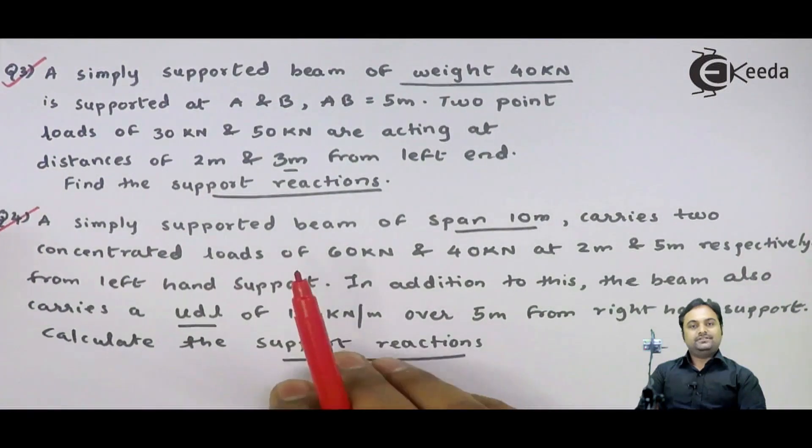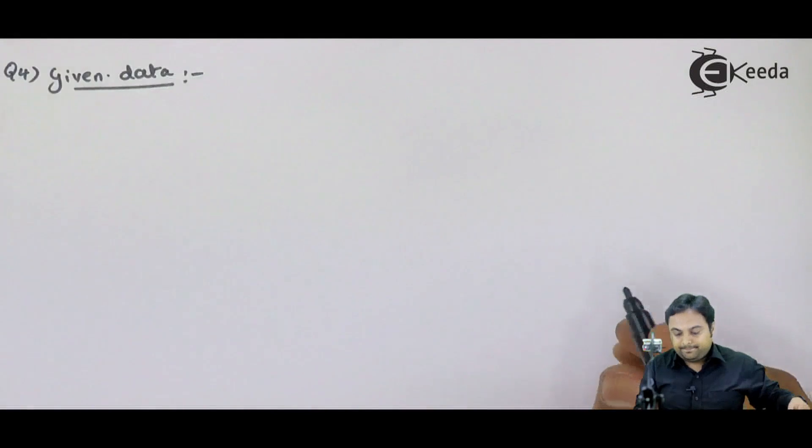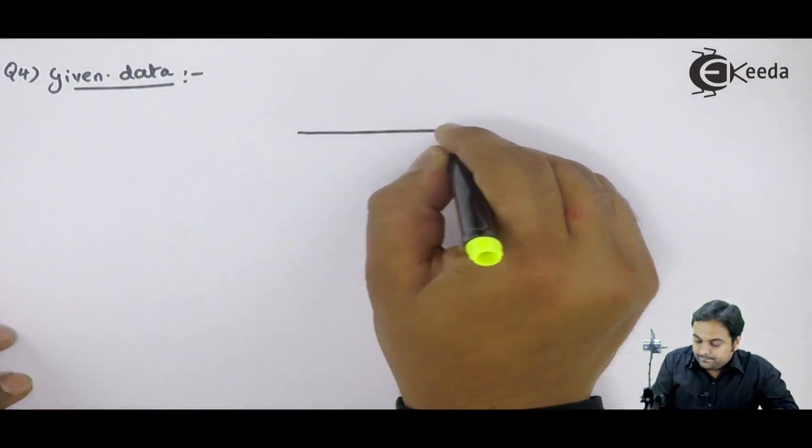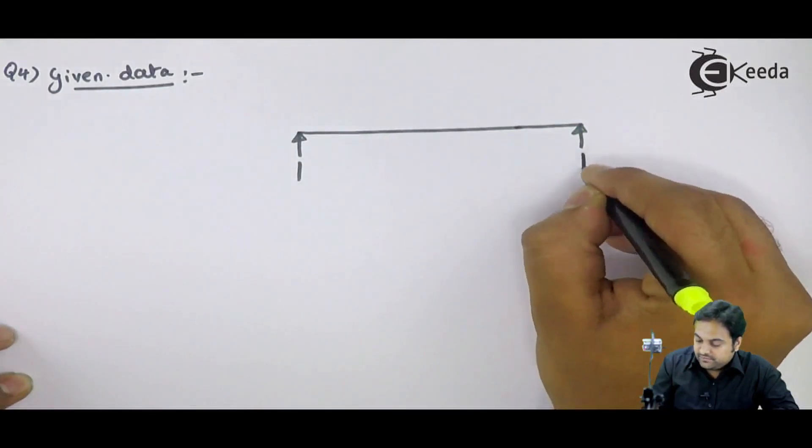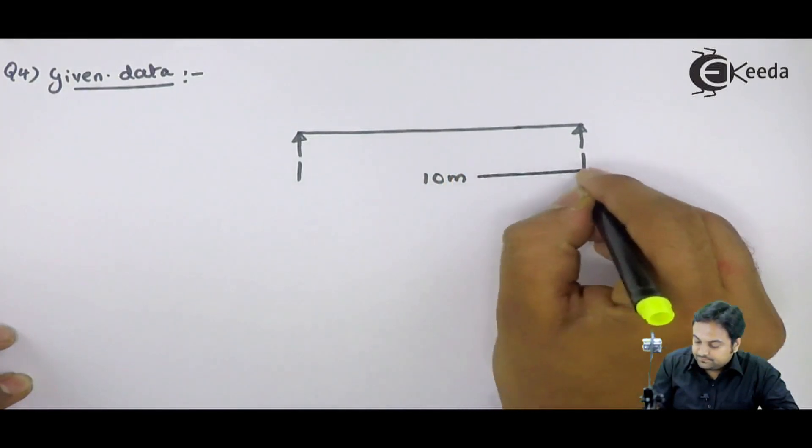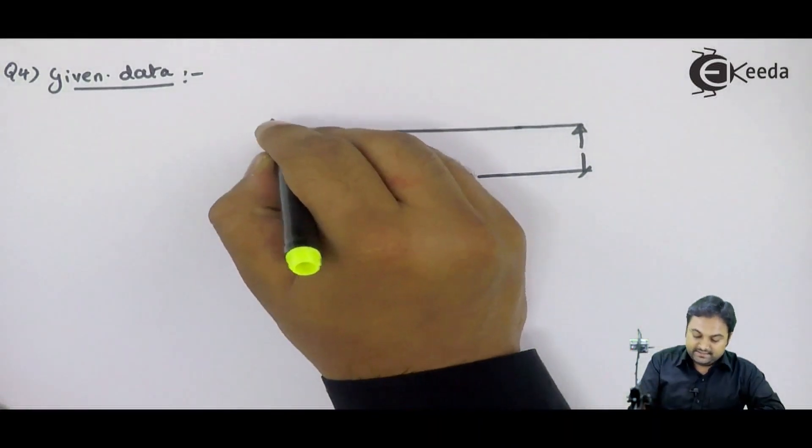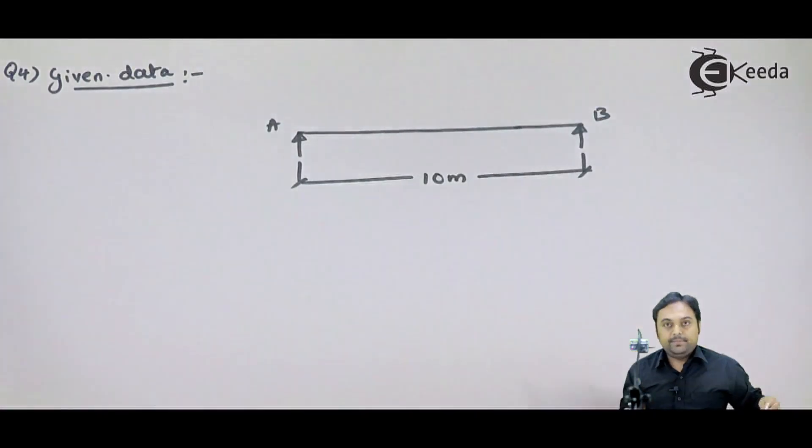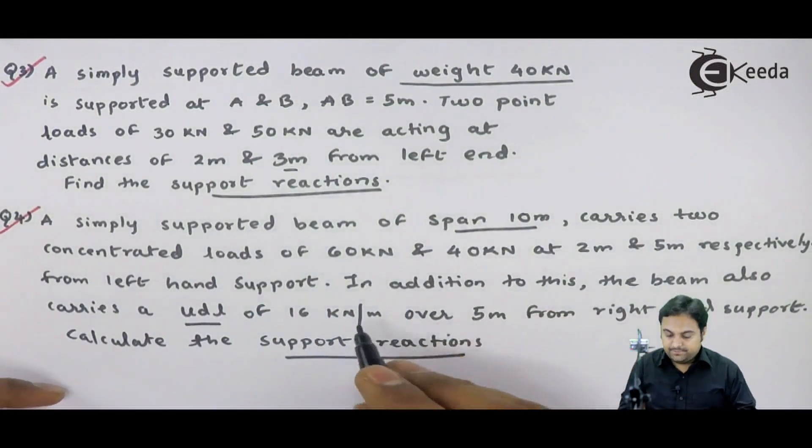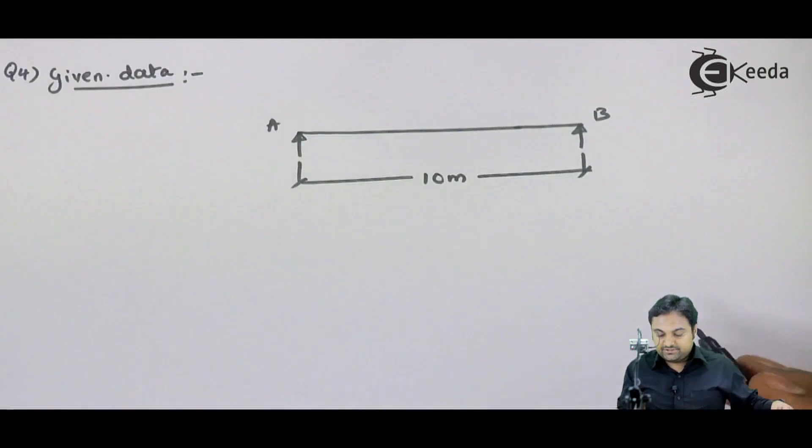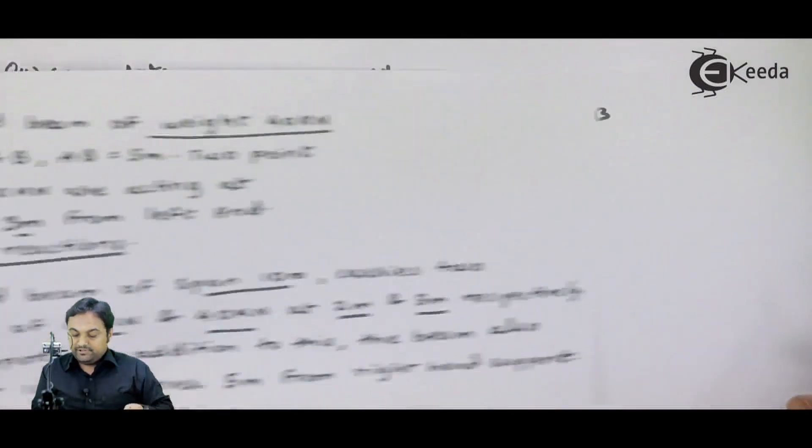Now let us try to draw the diagram for this. Here we have a simply supported beam of span 10 meters. I will call it as AB. The beam AB carries two concentrated loads of 60 kilonewton and 40 kilonewton. 60 kilonewton is at 2 meter distance, 40 kilonewton is at 5 meter distance.